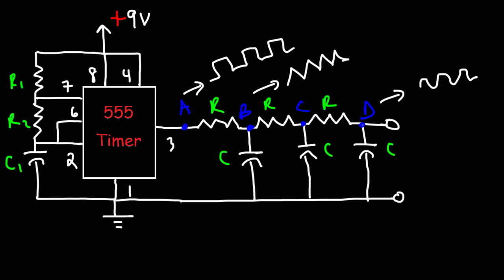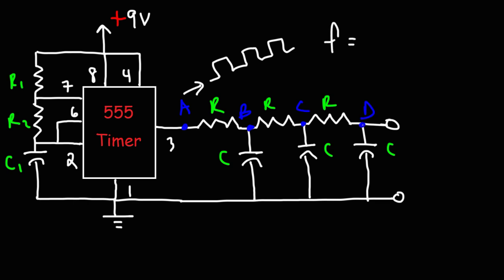Let's talk about the frequency of the square wave at point A. That frequency depends on the values of R1, R2, and C1. It's approximately equal to 1.44 divided by (R1 + 2R2) × C1.